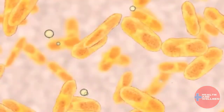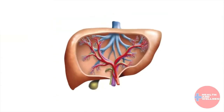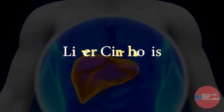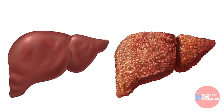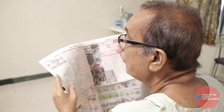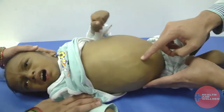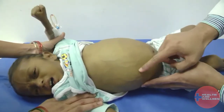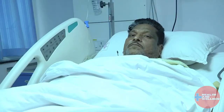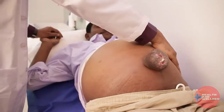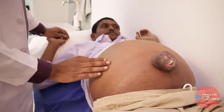Whether it is hepatitis B or fatty liver, when neglected these diseases can result in total liver failure — a condition known as liver cirrhosis. This condition is irreversible and is responsible for the deaths of many people every year. When a person's liver fails, it can be fatal.